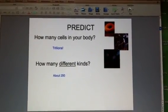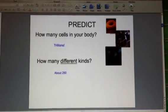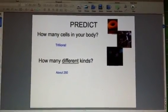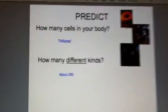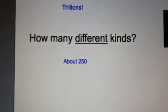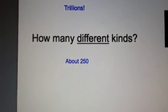And if you had to guess how many different kinds, like stomach, liver, lung, etc. That's a little tougher to decide, but there are actually about 250 different types.